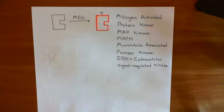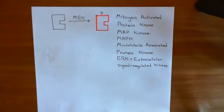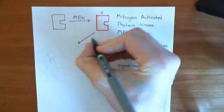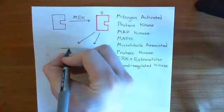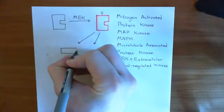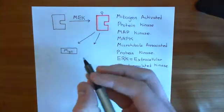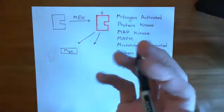Now that we've covered the different names of this protein, let's discuss what it actually does. The MAP kinase has now been phosphorylated by the MEK kinase enzyme and is active. It's going to phosphorylate other proteins, and two of its major targets — it has a lot of targets — are the MYC transcription factors. There are a huge number of different MYC transcription factors.